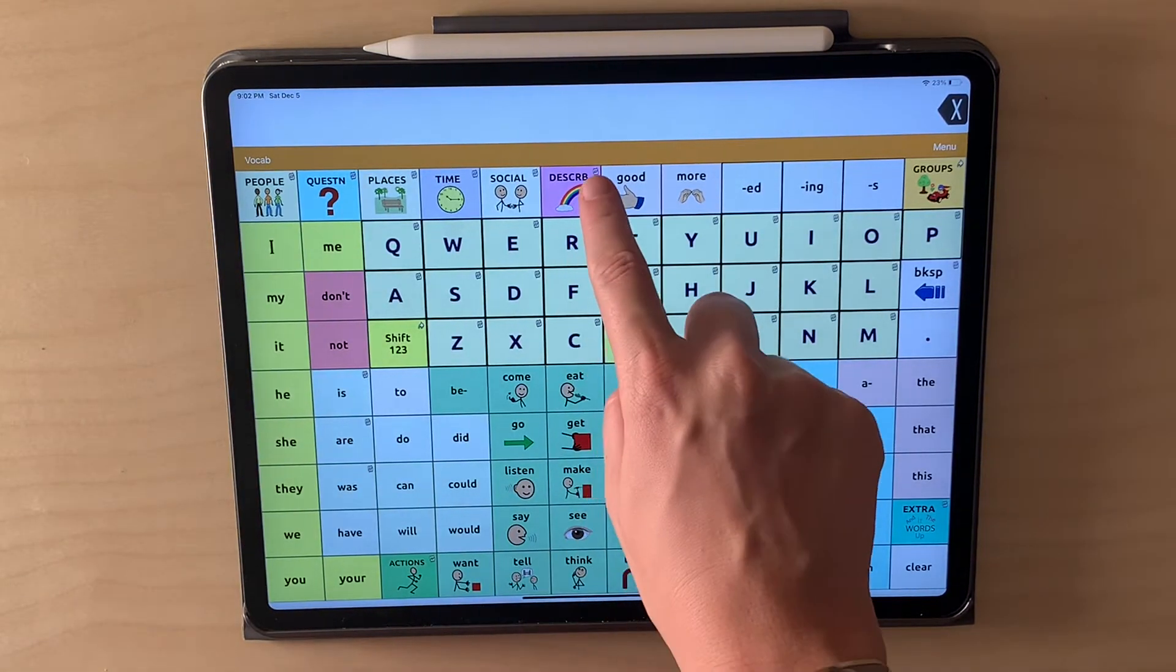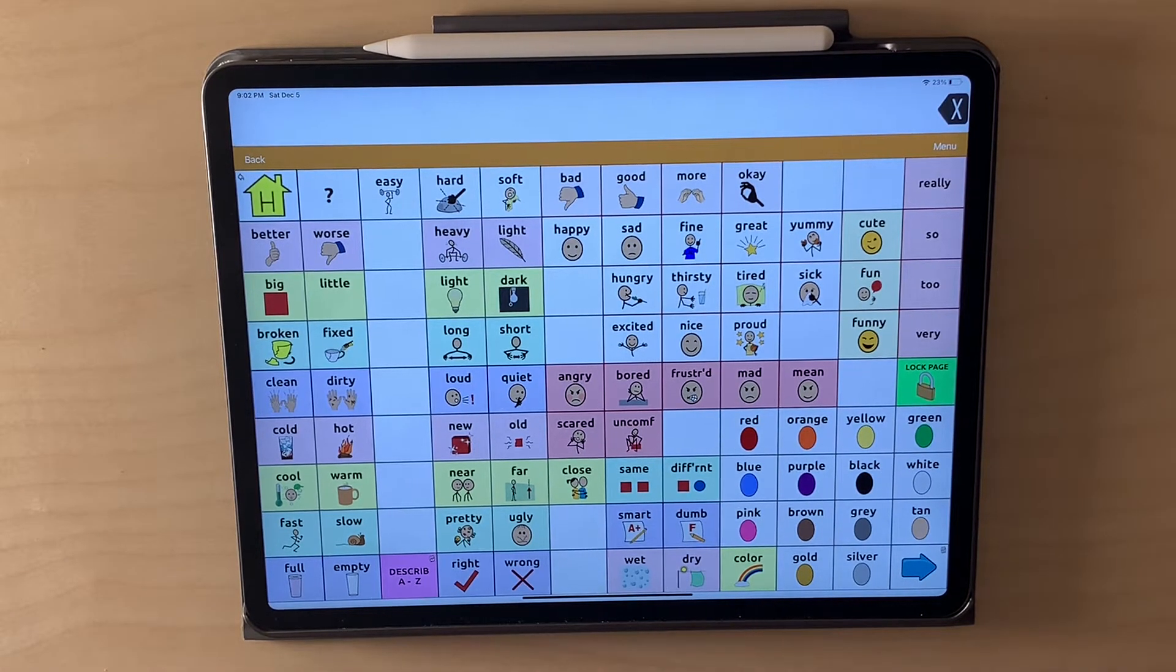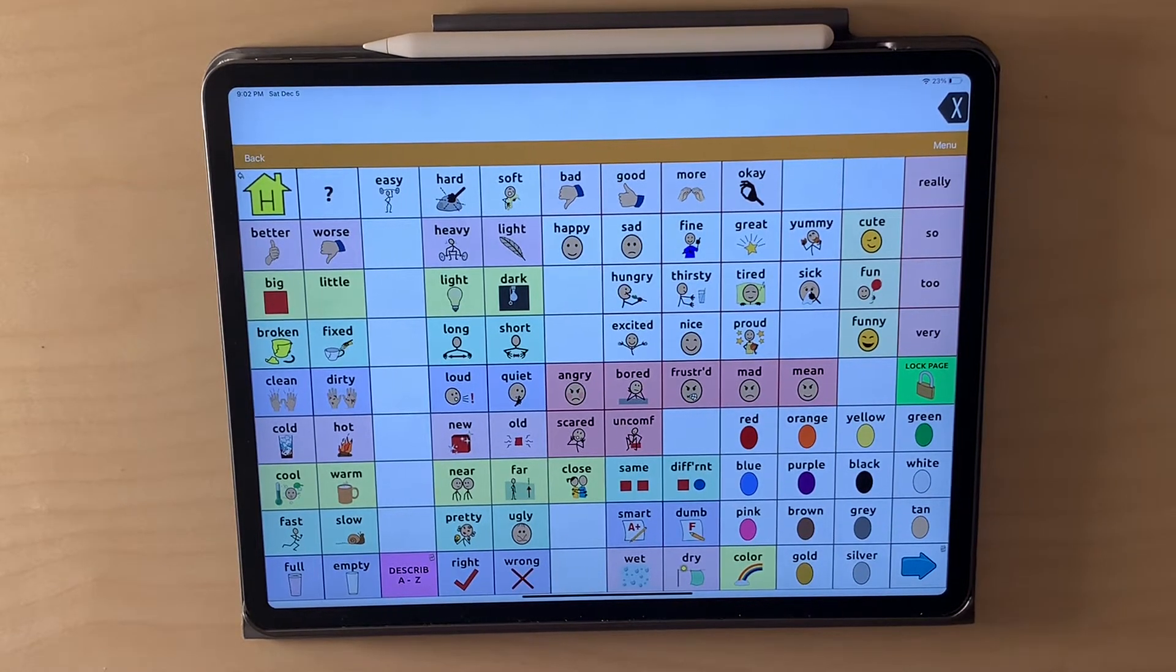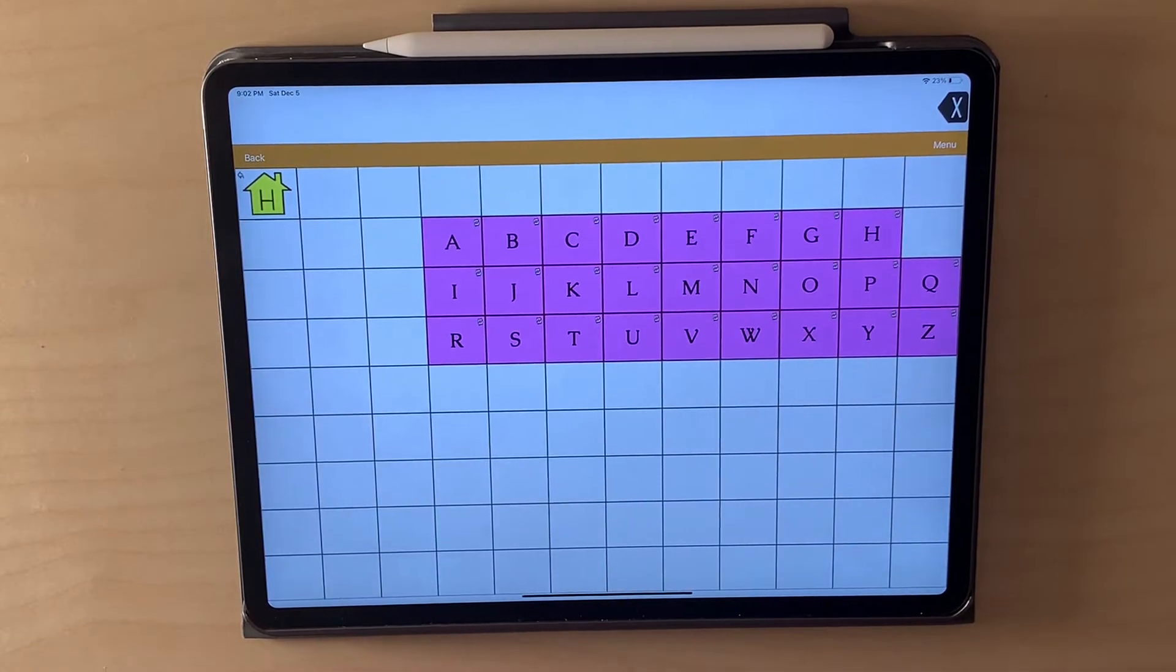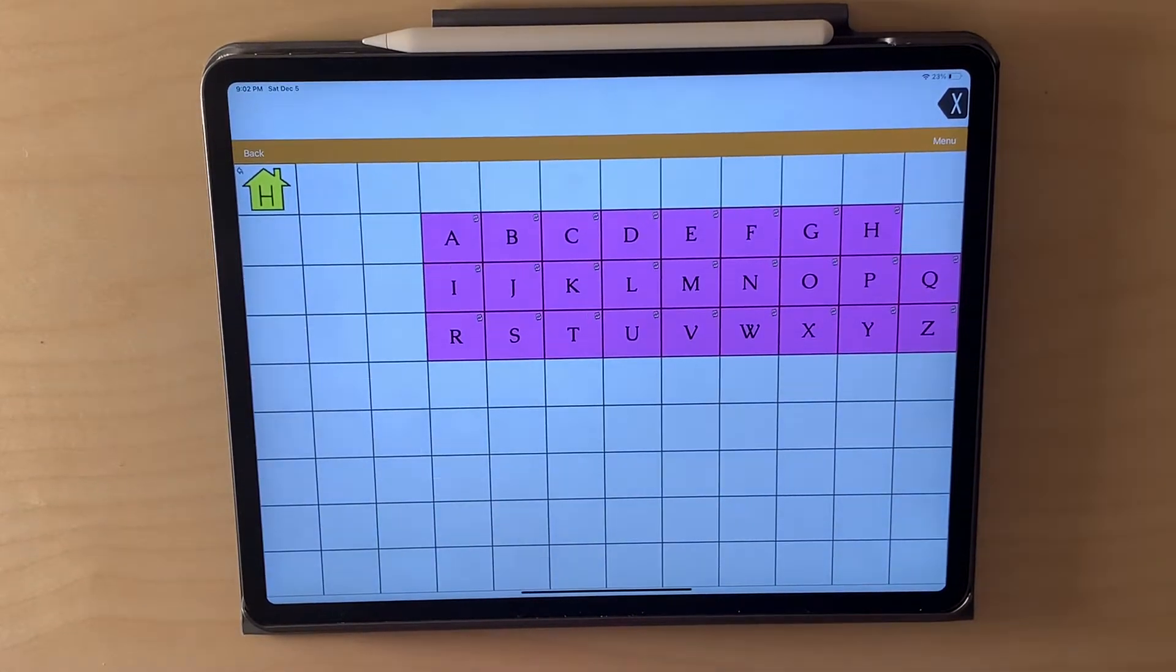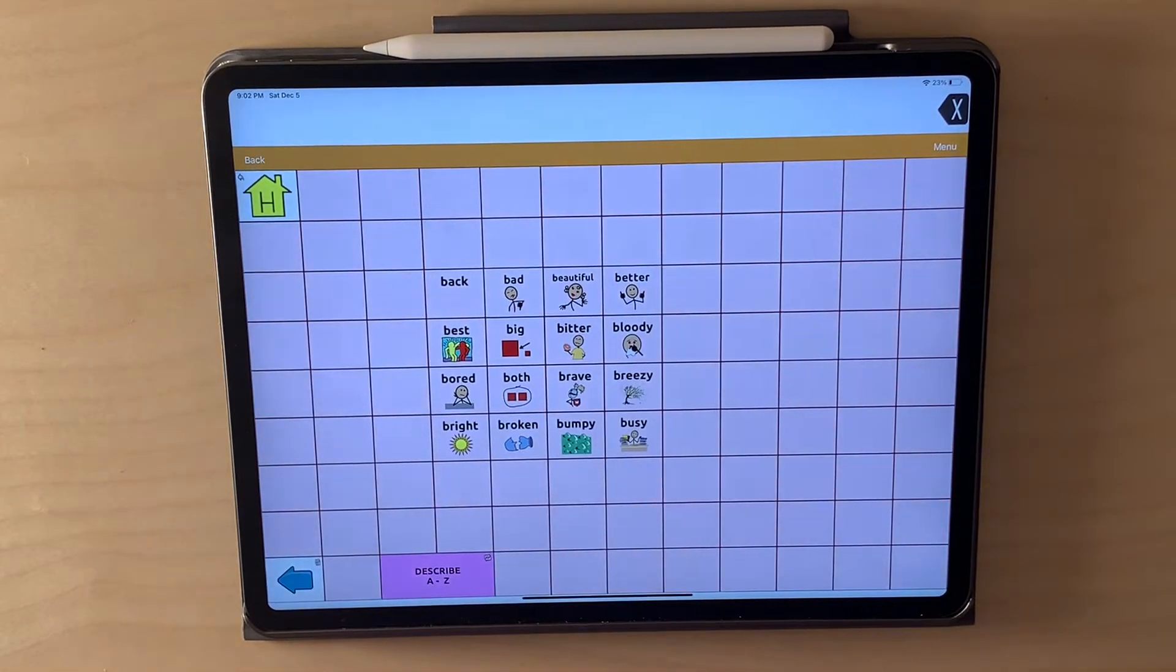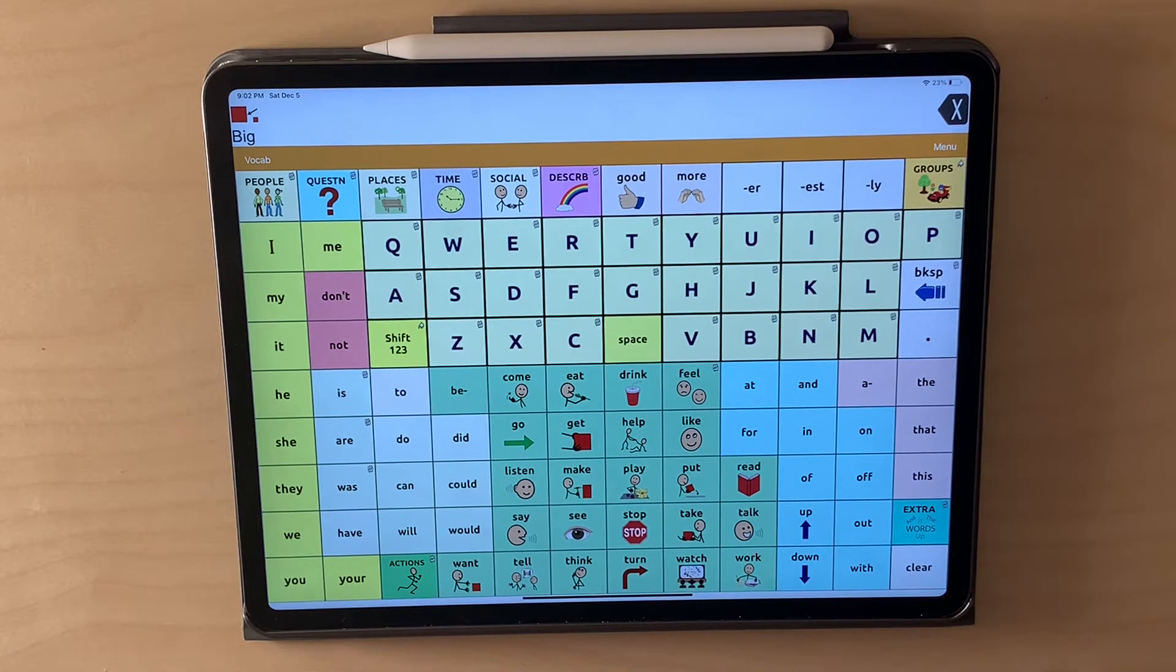There's also describing words. Probably the one I use the most it feels like. We have a lot of common descriptors on this first page but we can search by the first letter if we're looking for something specific. Maybe I want to look for big and I didn't see that. I go to B and I see big there.